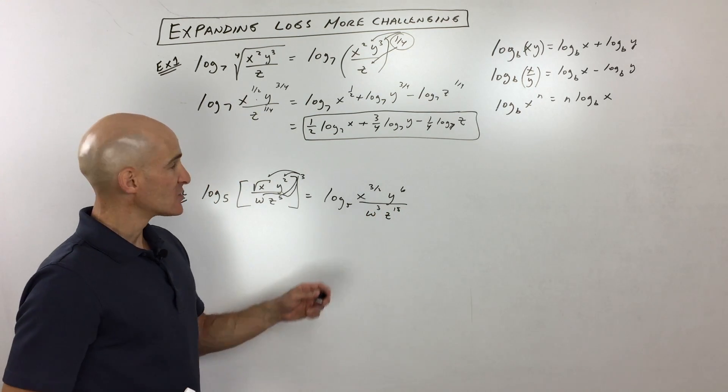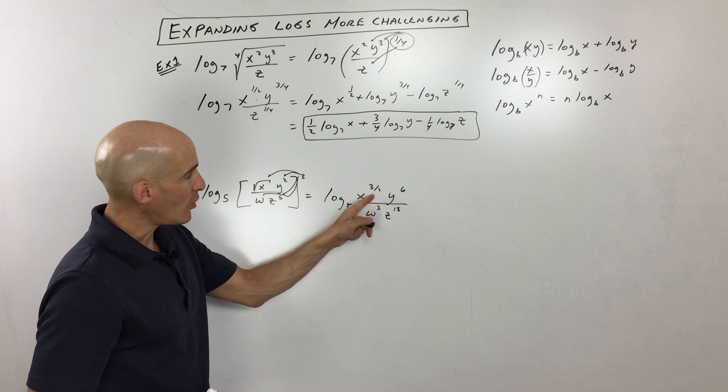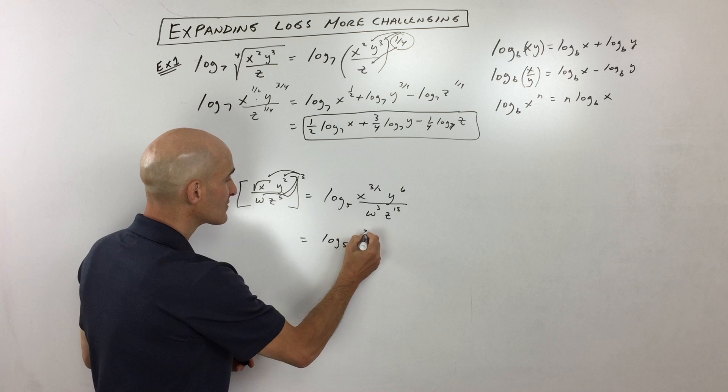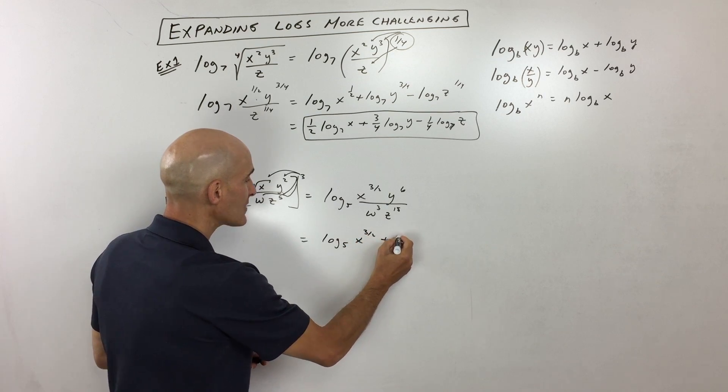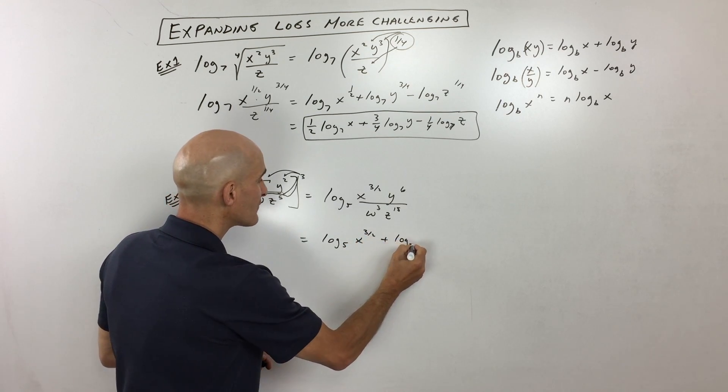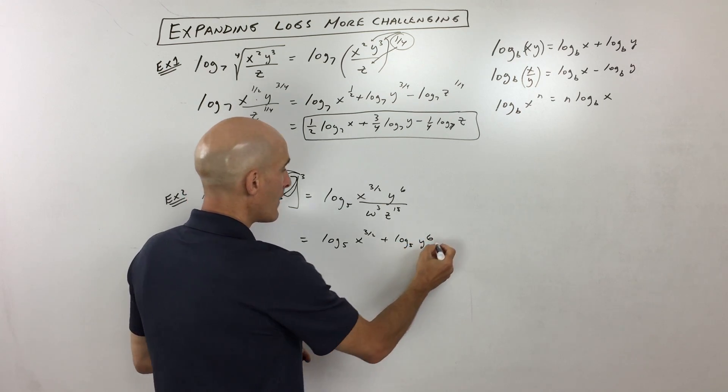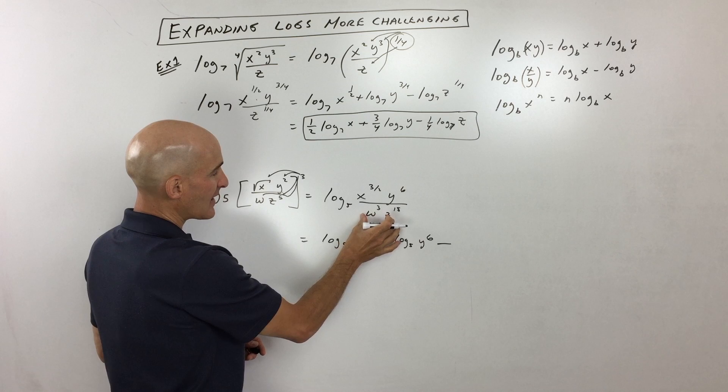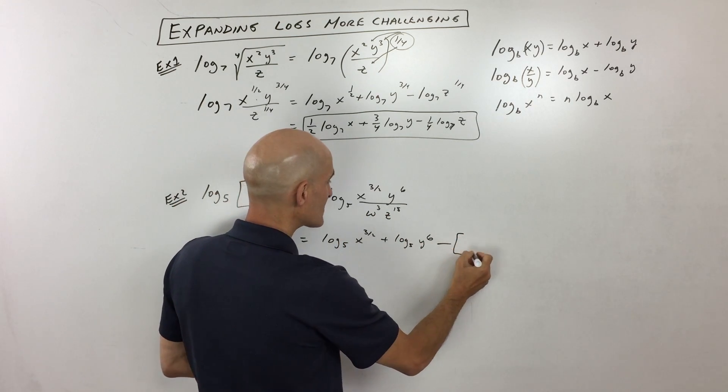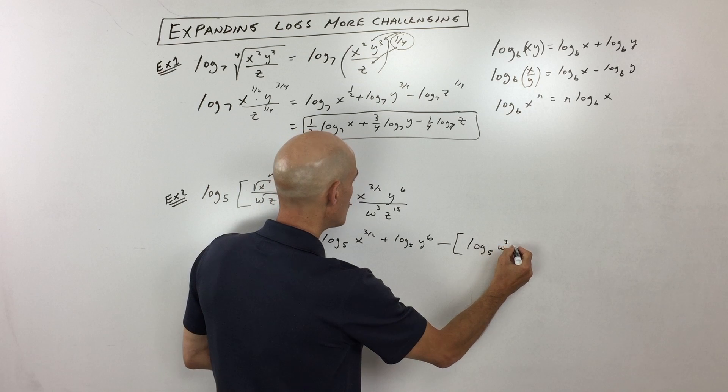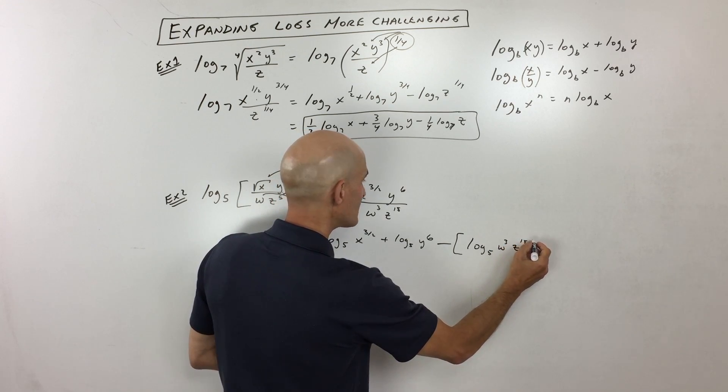So now you can see how these two quantities are multiplied together. So we can write this as a sum. So we're going to write this as log base five of x to the three-halves plus a log base five y to the sixth minus, now notice see how we're dividing by this quantity. So I'm going to write this as minus log base five of w cubed times z to the fifteenth.